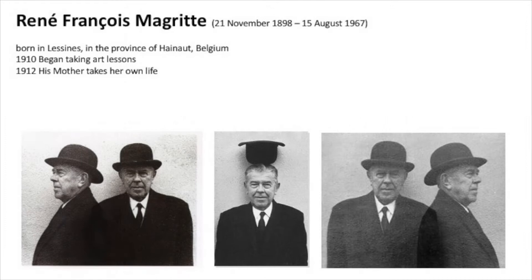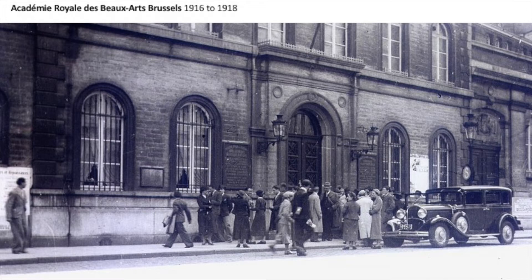Magritte was born in 1898 and showed an early aptitude towards art. He began taking art lessons in 1910, but his early life was marked in some ways by tragedy. His mother had severe mental issues and this culminated in her taking her own life very early on in his life. Later on in 1916, he would study at the Royal Arts Academy in Brussels and this is where we first see some of his work start to emerge.